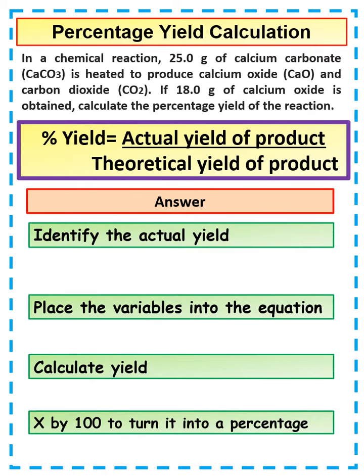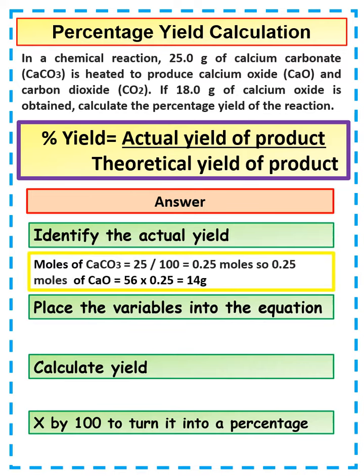To work out the actual yield, we have to go back and use our equation for moles. We need to start off by calculating the number of moles of calcium carbonate we've got. We're going to do that by the amount, which is 25, then divide that by the MR, the relative formula mass of calcium carbonate, which is 100. That would give us 0.25 moles of calcium carbonate.